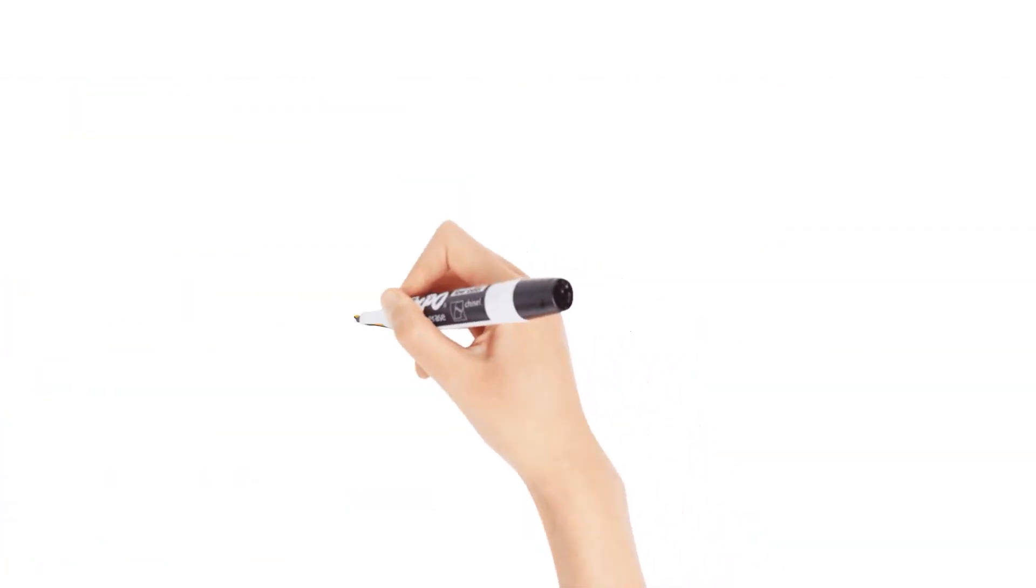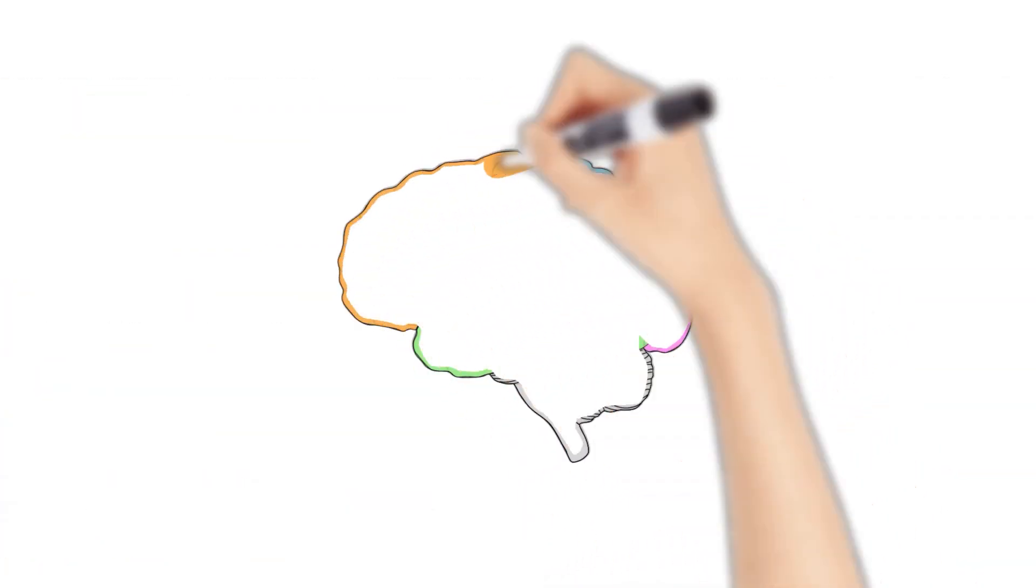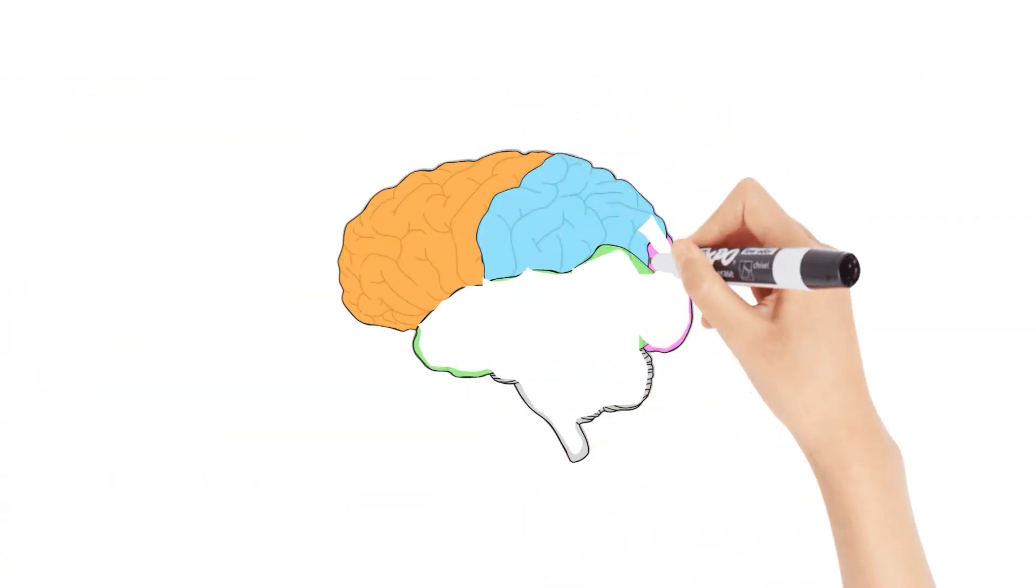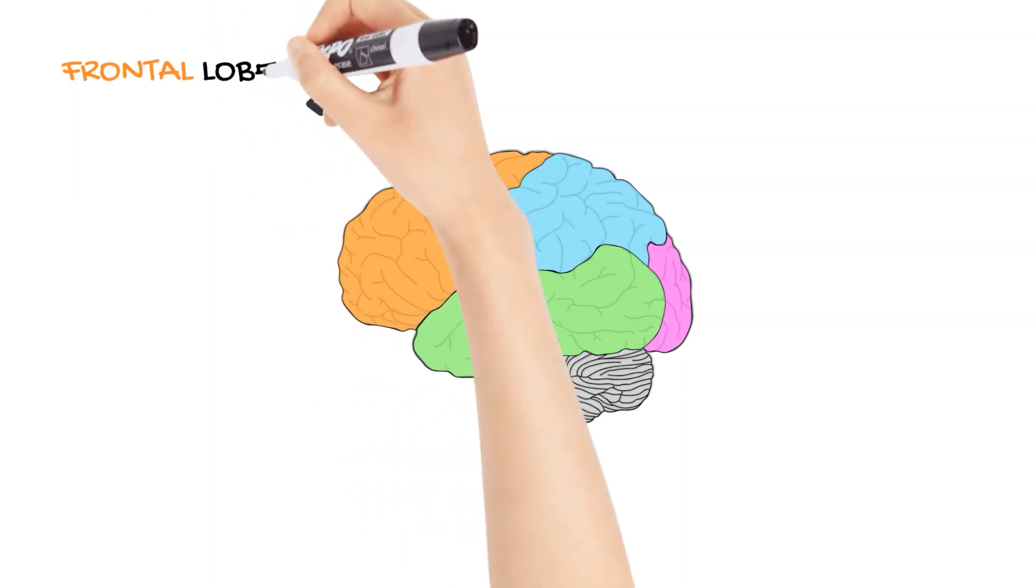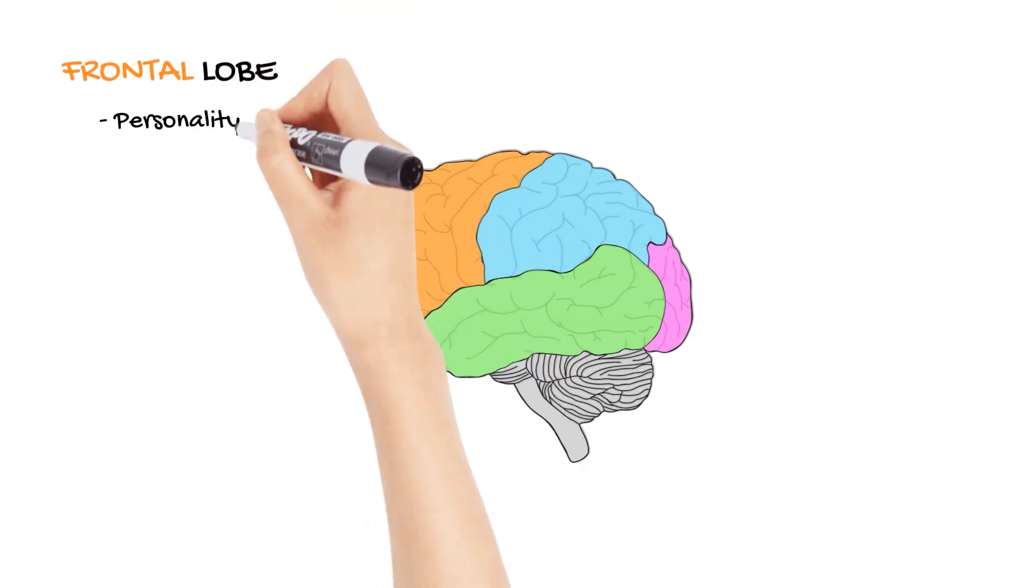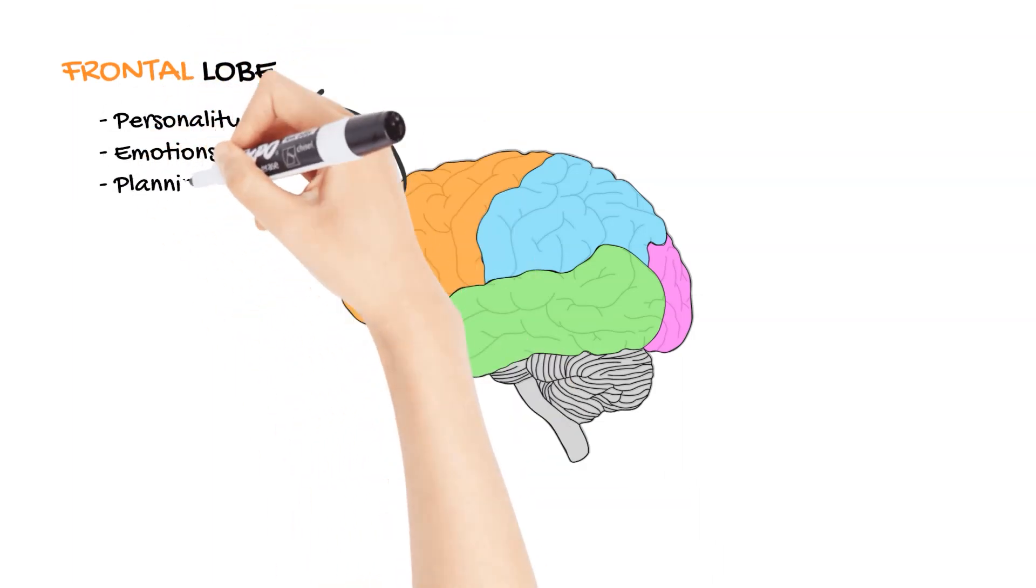Within the cerebral hemispheres lie four specialized lobes, each a master of its domain. The frontal lobe, sitting just behind your forehead, is the command center for our personality, emotions, and the advanced ability to plan and reason. It's where our most complex thoughts and decisions are made, from solving a puzzle to planning our future.